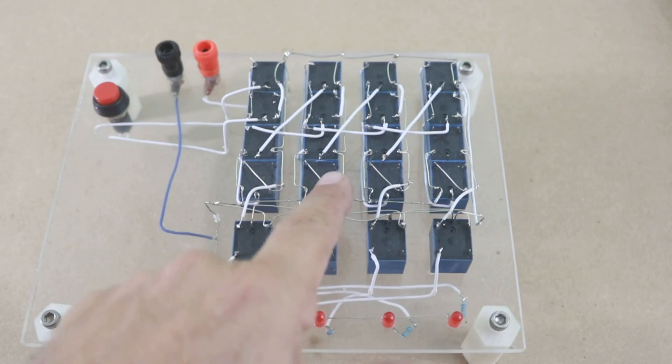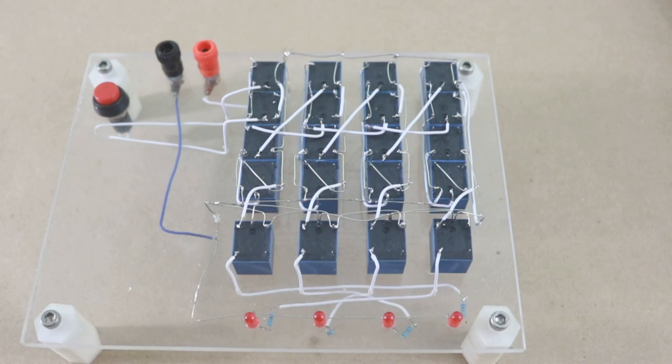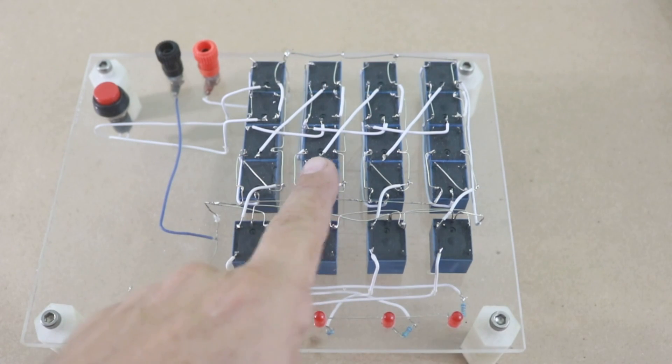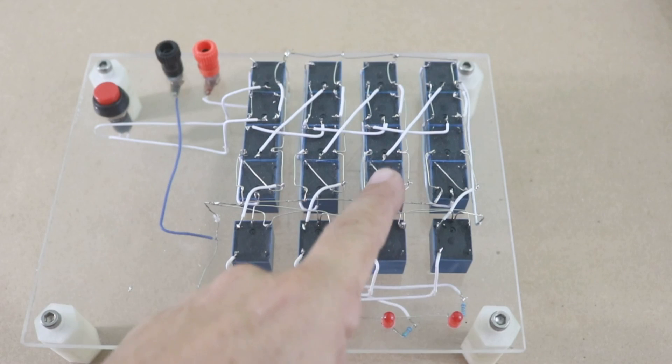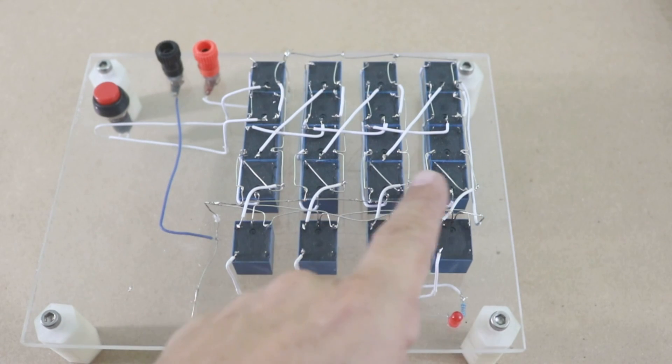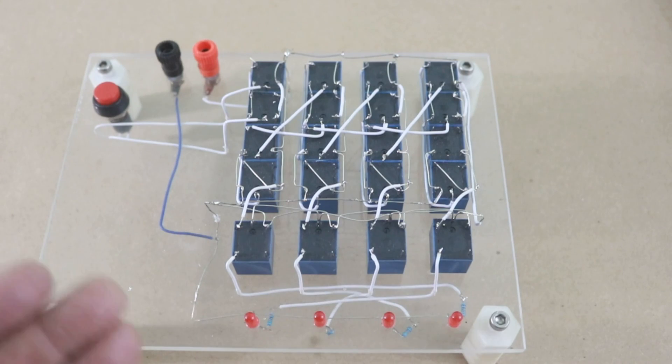The next flip-flop produces the second digit, 0, 0, 1, 1, 0, 0, 1, 1. Here you have the 4 0s, 4 1s. And here you have the 8 0s, 8 1s.